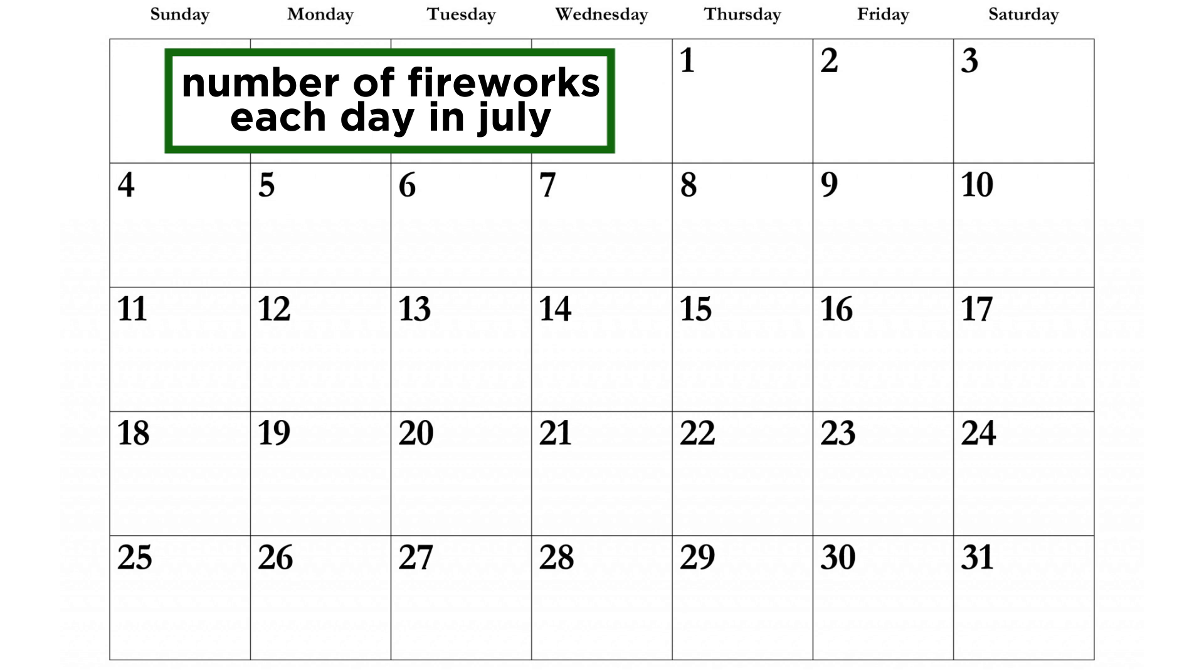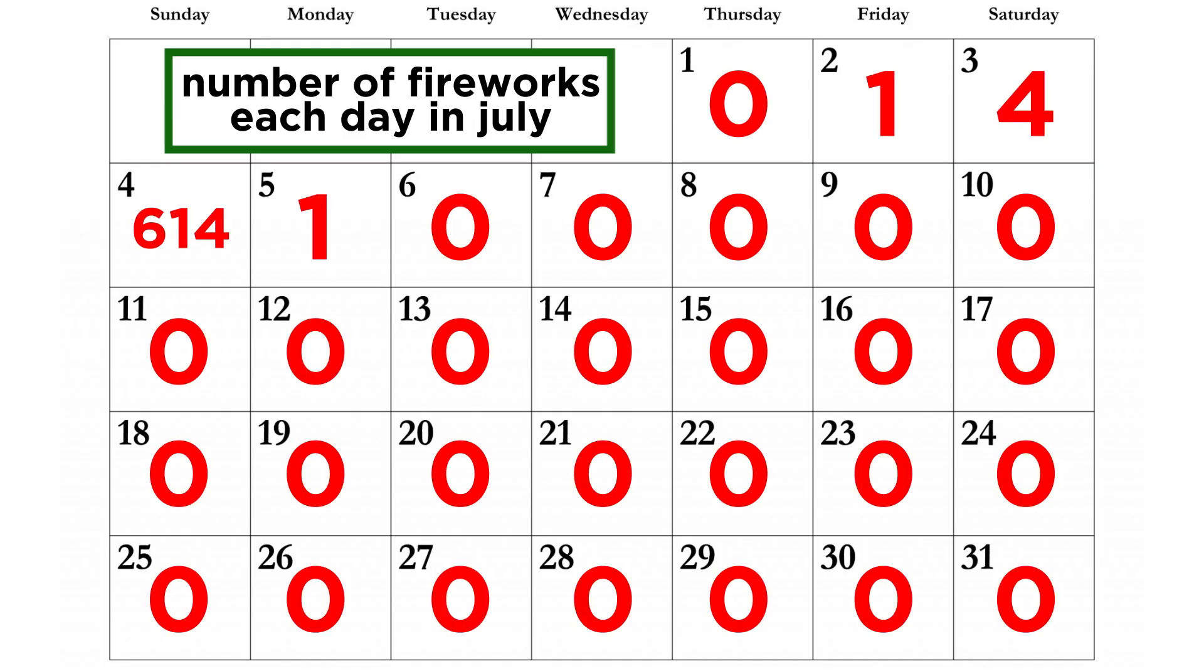Say we are recording the number of fireworks that go off per day in the month of July in a particular town. Almost every day would be zero or close to it, but on the fourth of July, for just one day, this value would be in the hundreds or thousands.